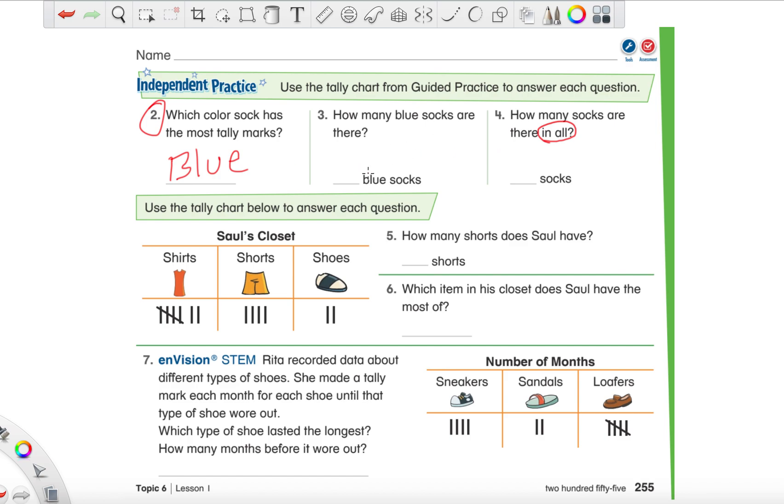So all you gotta do is write the number on that blank space. Number four says, how many socks are there in all? So when we see the words in all, they're not asking just how many green, how many orange, how many blue. They want to know if you were to take all those socks all together, what is the grand total of socks? See, that stuff is easy peasy for you. And then when we go down here to five and six, now remember guys, you're doing all this completely on your own. I'm not giving you these answers. I feel like this is an easy enough lesson that you can actually just jump right into it.